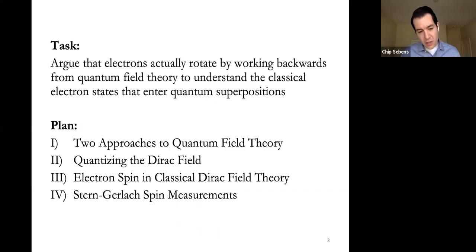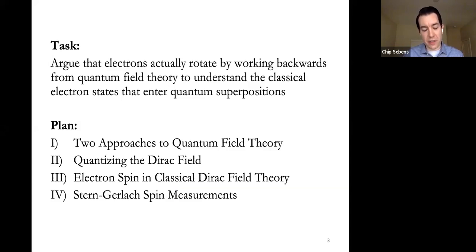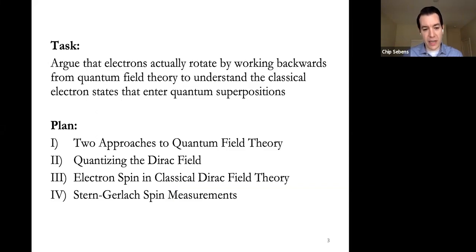The strategy for the talk will be to start with quantum field theory and work backwards to a classical picture of the electron. I'll start with two approaches to quantum field theory: a particle approach and a field approach. We'll take the field approach, look at how the Dirac field is standardly quantized, then offer a better way of quantizing it. That better way will help us understand what the classical Dirac field is. We'll then apply that to understand what an electron is classically and how it spins, and briefly discuss Stern-Gerlach experiments and the two-valued nature of spin.